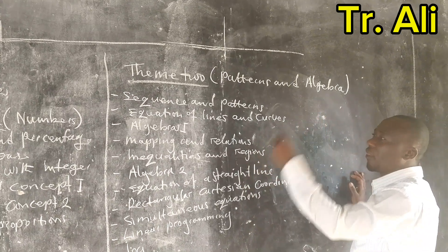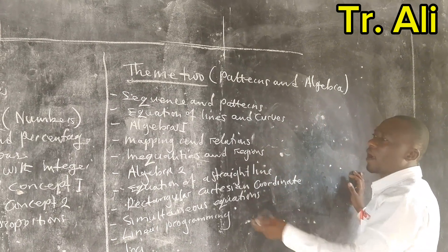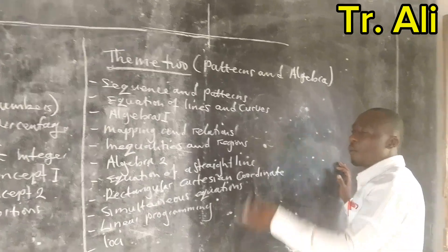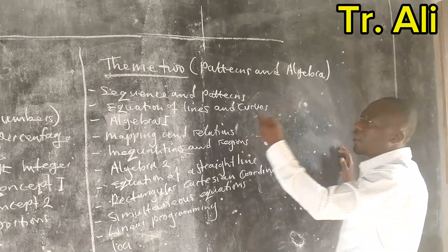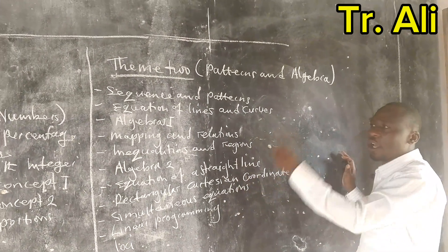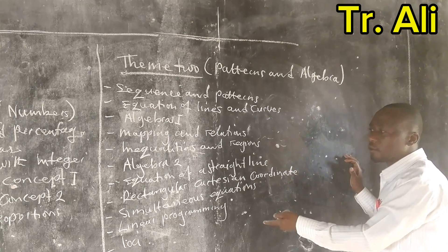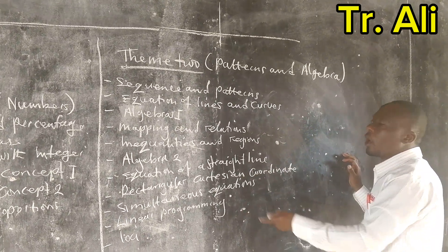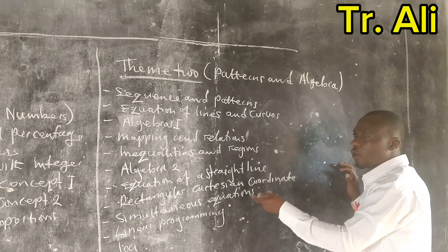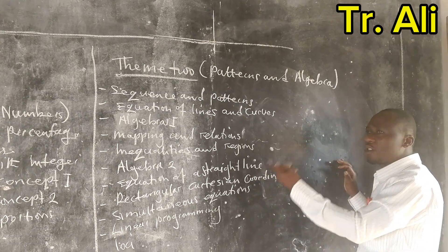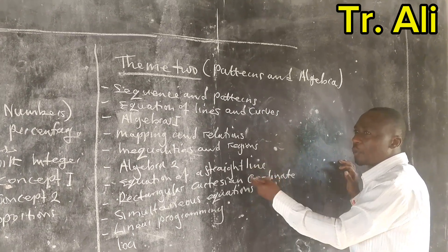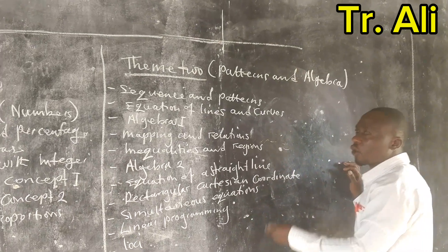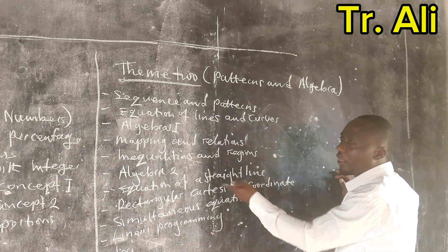As I told you in the first theme — numbers — there are six topics; expect one question and it is compulsory. So in theme two, still in section A, they are going to bring 11 questions, 11 topics. Out of 11 topics, they are going to set one topic or two that combine together, and once they are given, you have to answer them.